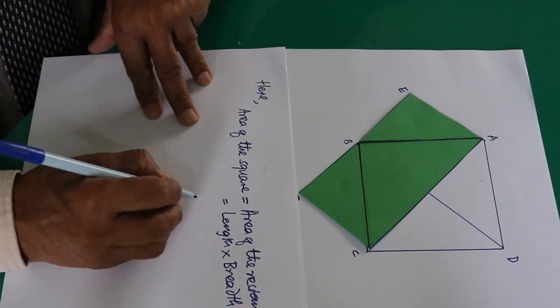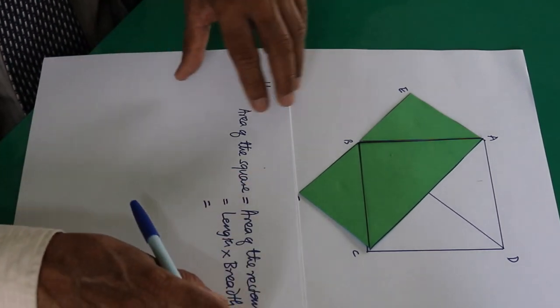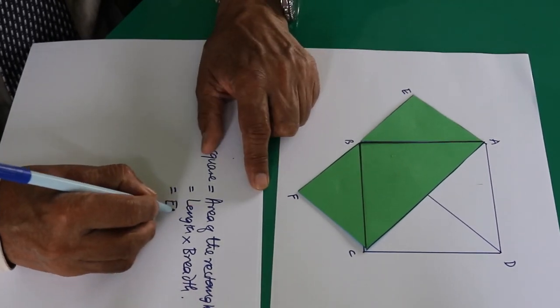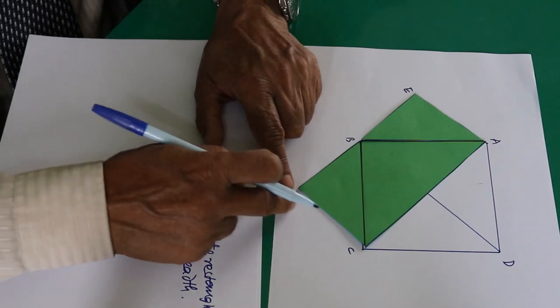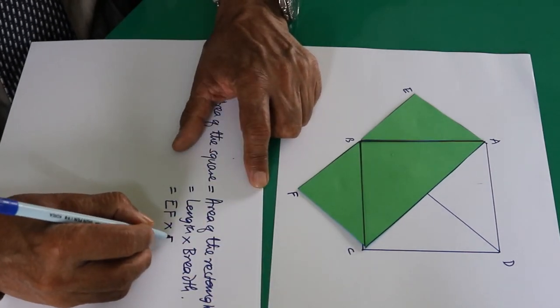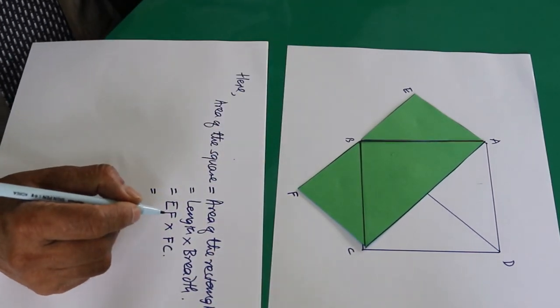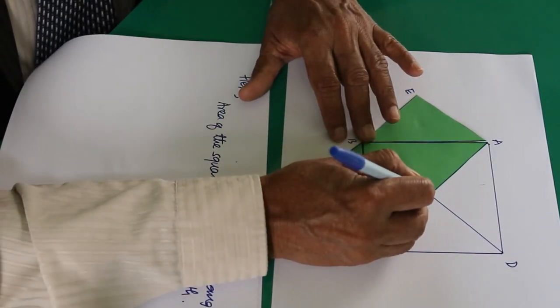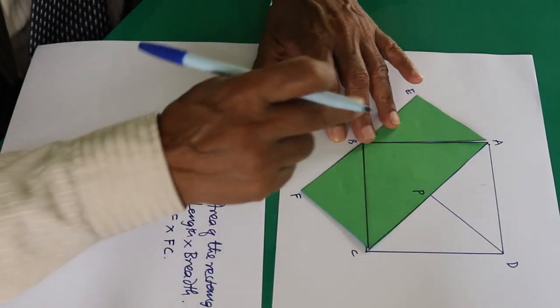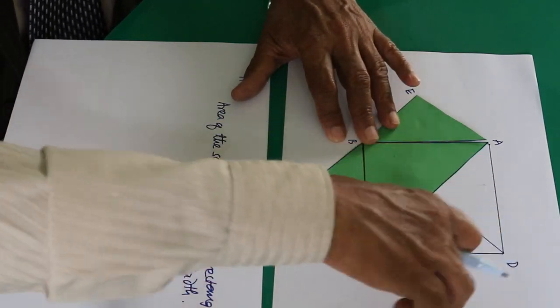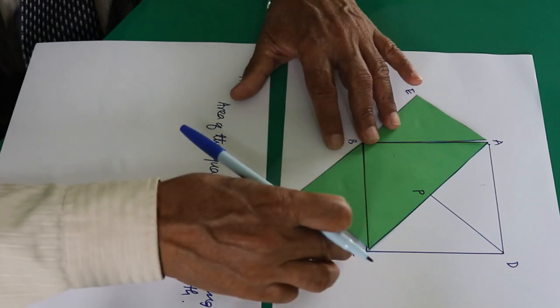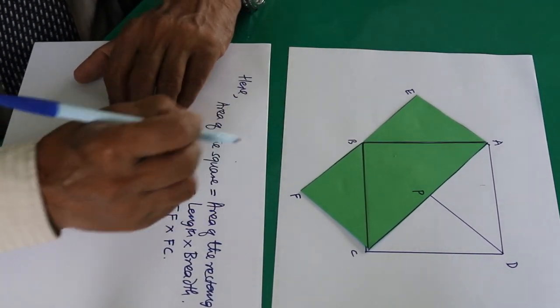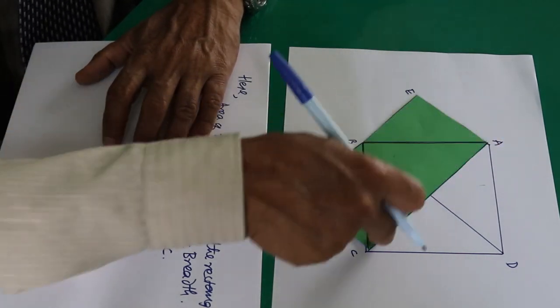Length times breadth—the length is EF, and the breadth is FC. This FC equals DP because it has been cut out from there and rotated, so DP goes to CF. That's why I can write: EF is AC, and FC is DP. This AC is a diagonal, and DP is half of the diagonal BD.